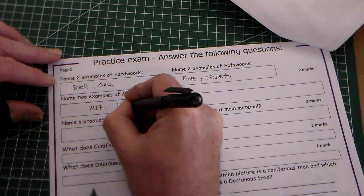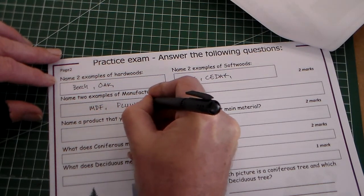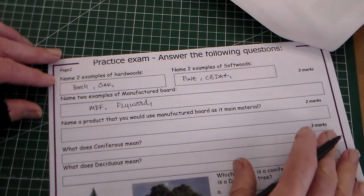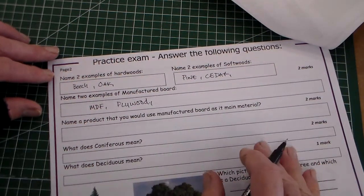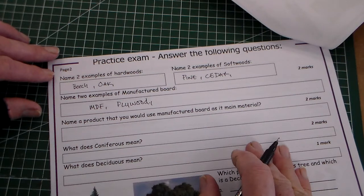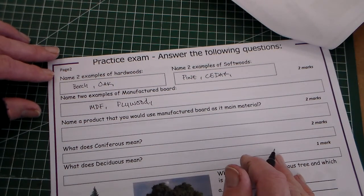We can say MDF and plywood. Other ones we could have added are chipboard, hardboard. I think they're the only ones that are included in the specification.